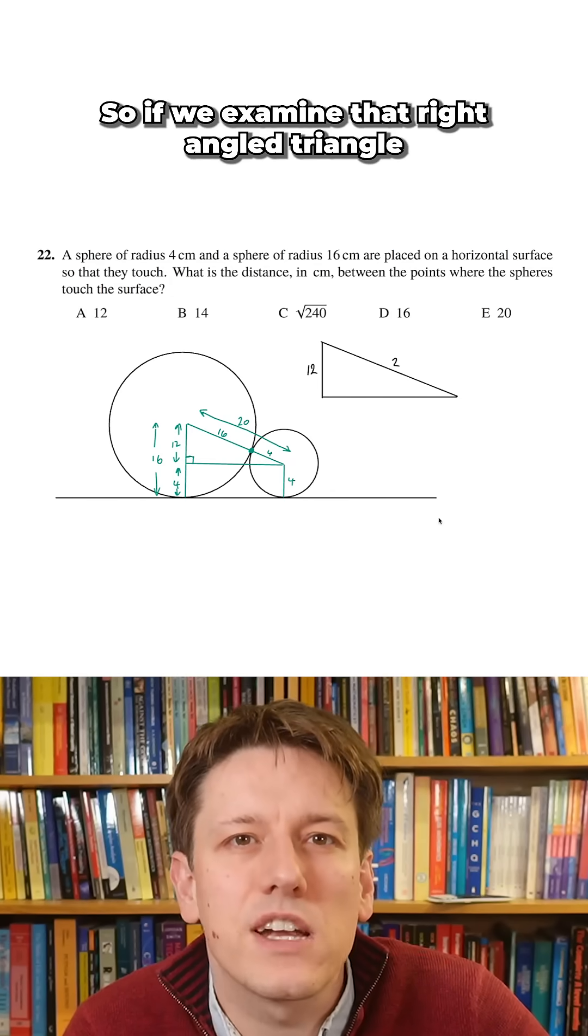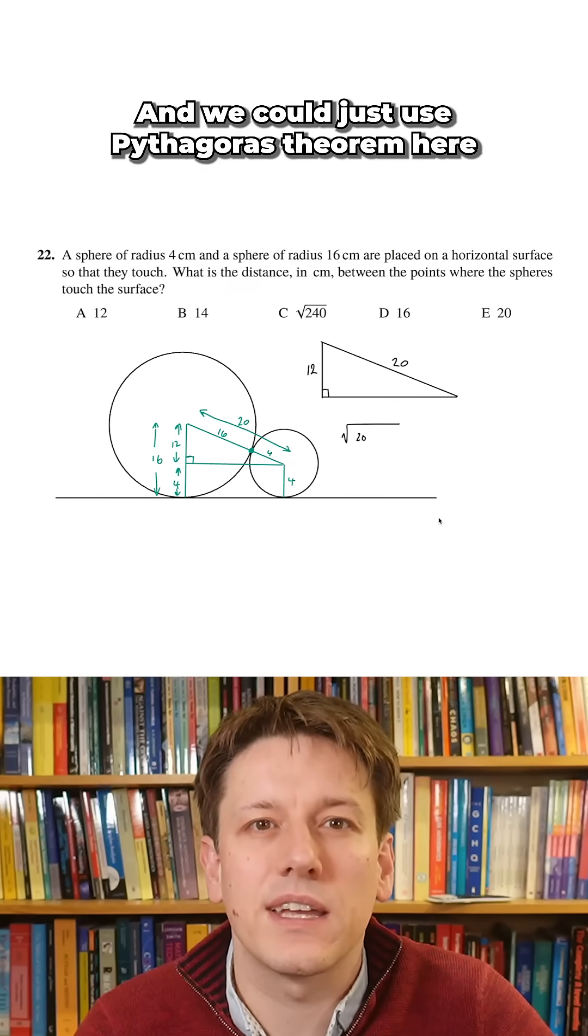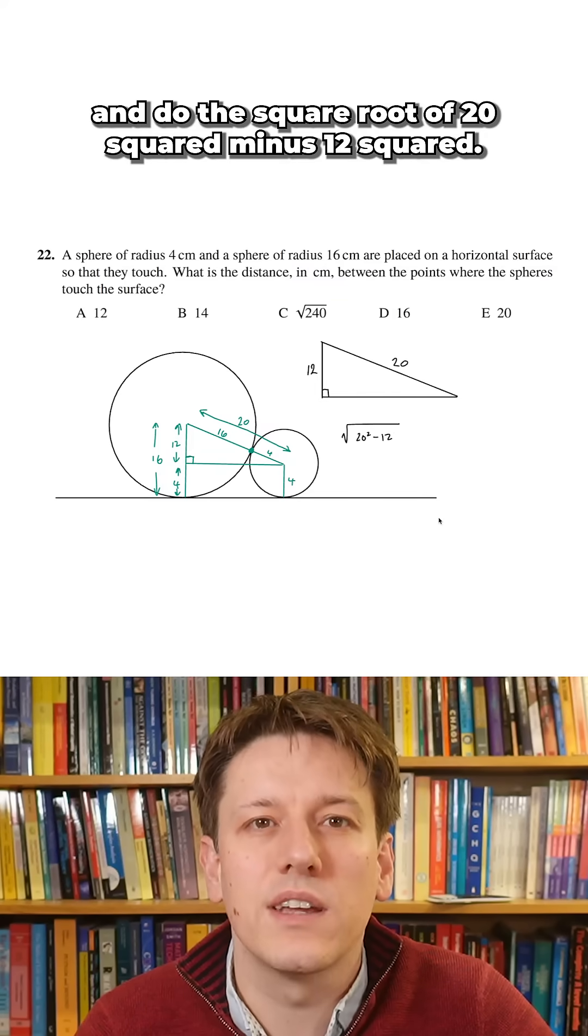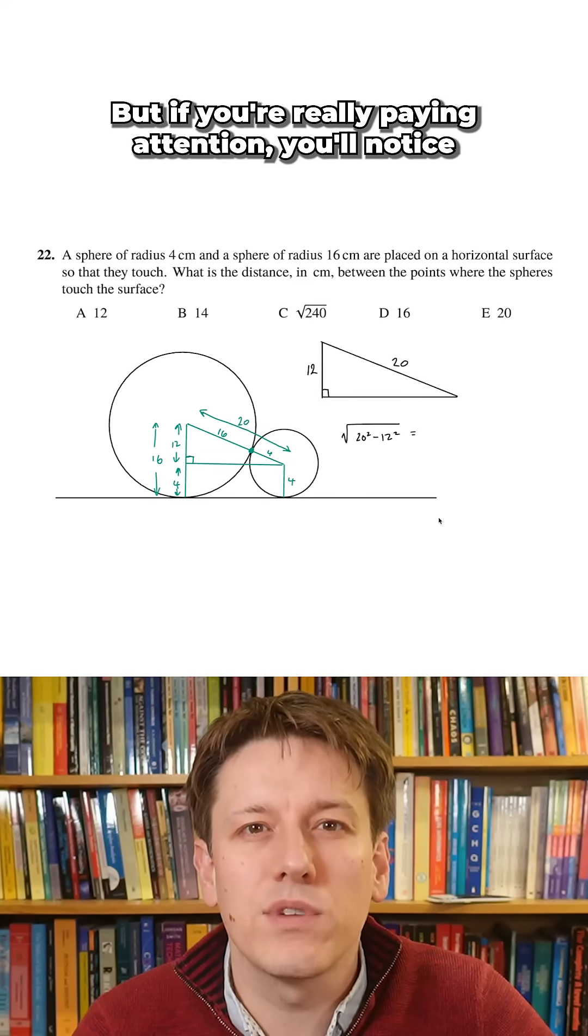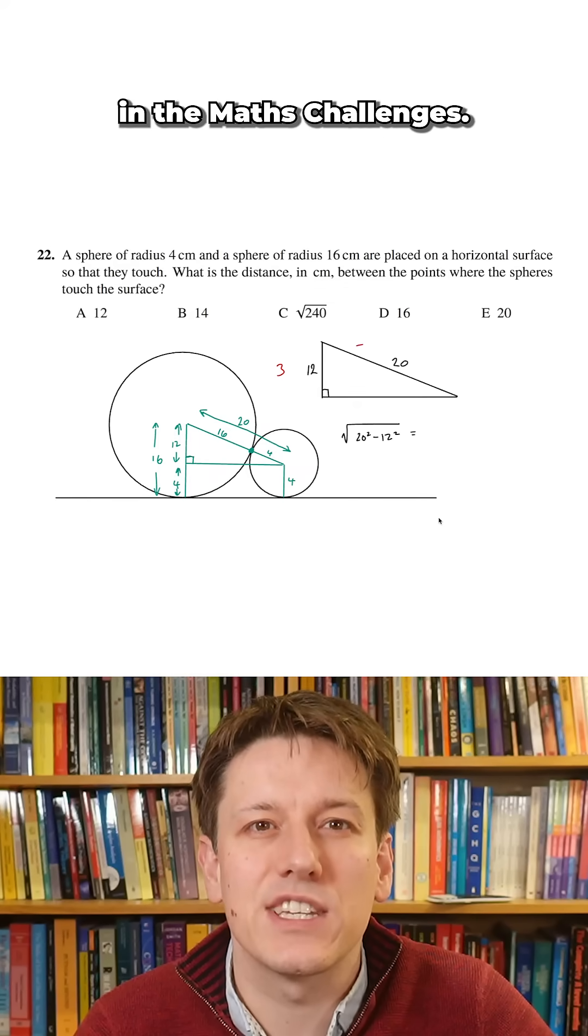So if we examine that right angle triangle, we've got the sides 12 and 20, and we could just use Pythagoras theorem here and do the square root of 20 squared minus 12 squared. But if you're really paying attention, you'll notice these Pythagorean triples come up a lot in the maths challenges.